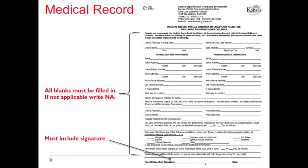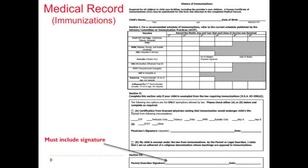Here is a copy of the Medical Record form. All blanks must be filled in; if not applicable, write in N/A. This form must also include a signature. Page 2 of the Medical Records form holds a place for the history of immunizations and must also include a signature.